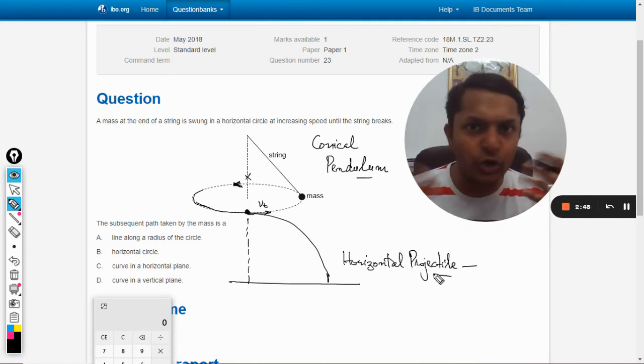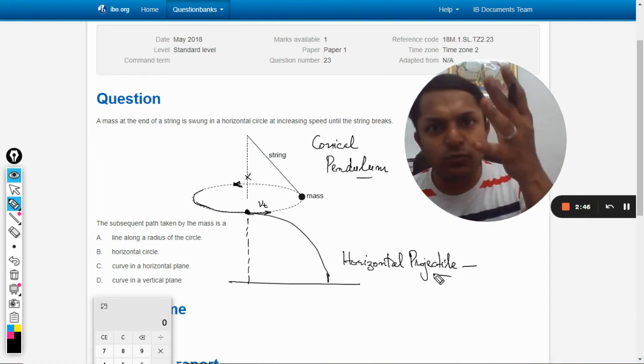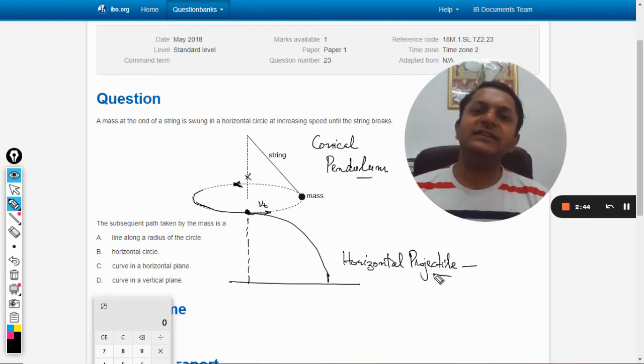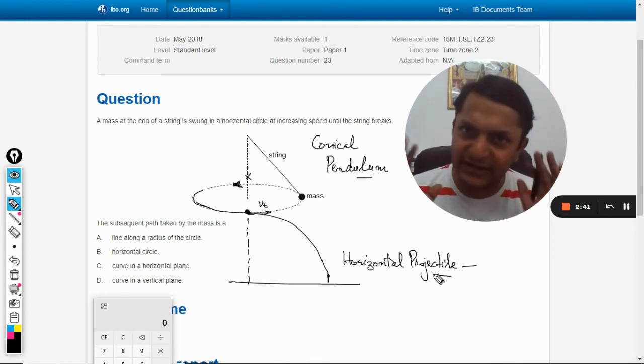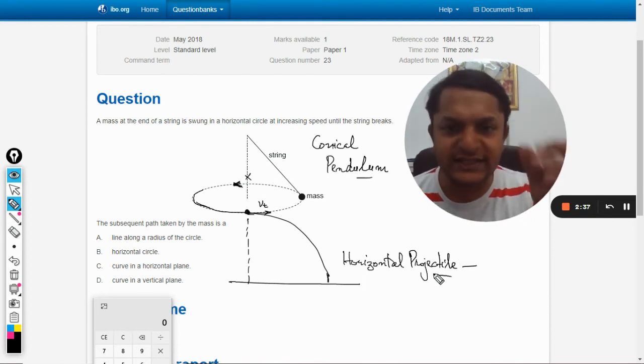Projectile motion is a motion in which the body, once thrown, once it is moved out of my hand, is acted upon only by one force and that is weight. So that kind of motion is known as projectile motion. So this is horizontal projectile motion.